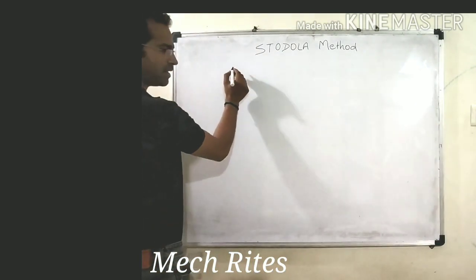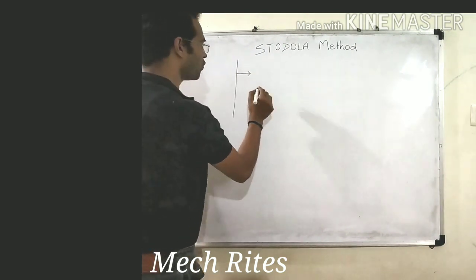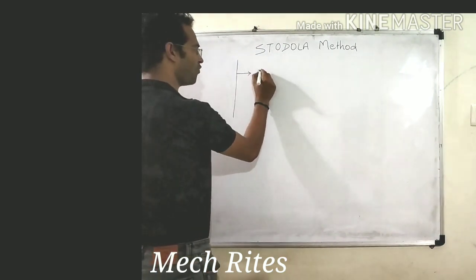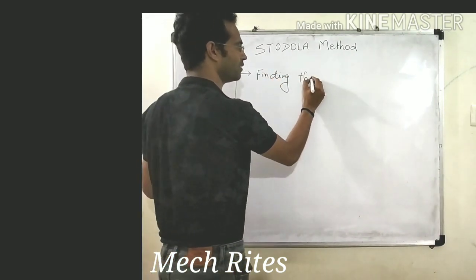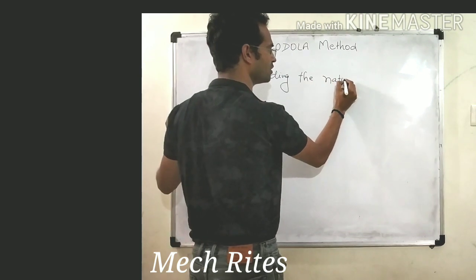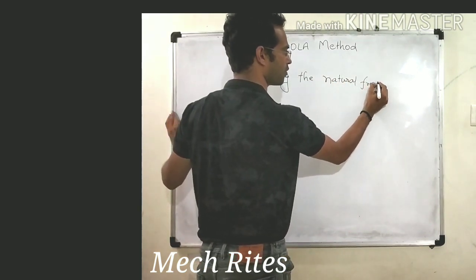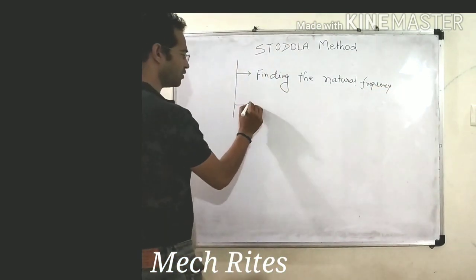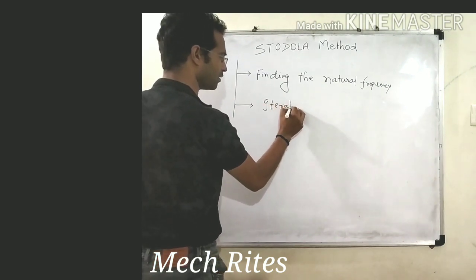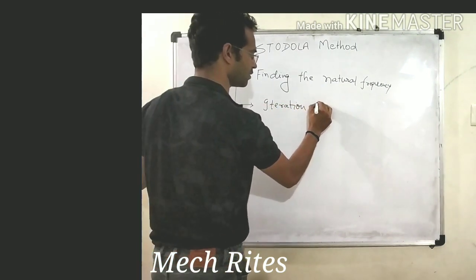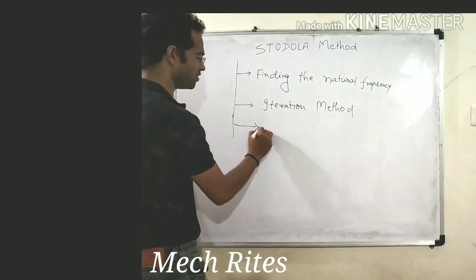So what is the Stodola Method? It is used for finding the natural frequency of a multi-degree-of-freedom system. It is an iteration method. It has basically five steps. Let's start with the first step.